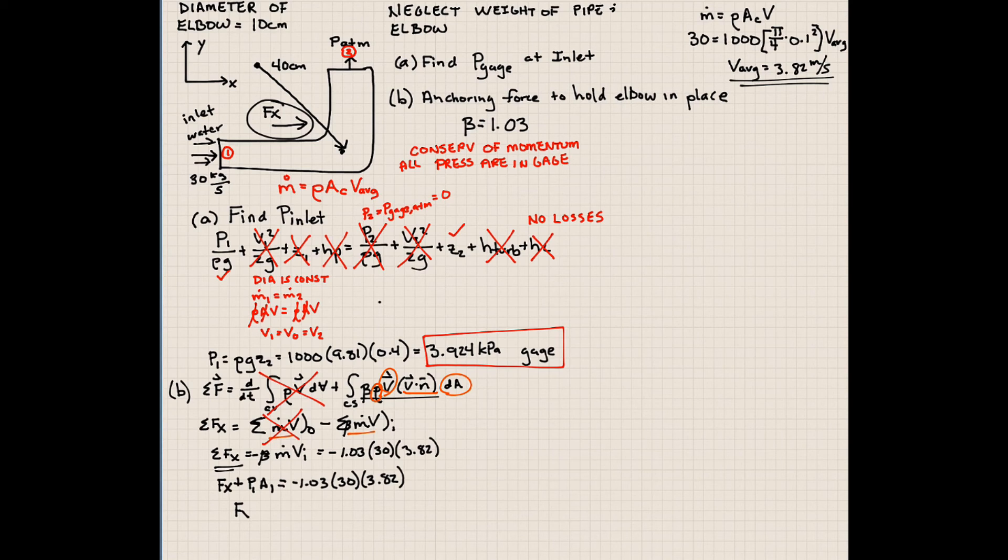So our F direction force is going to be minus 3.924 times our area, pi over 4 times 0.1 squared. So our total F direction force is going to be negative 148.8 newtons. This negative sign means we just guessed the direction wrong at the beginning, so it's actually going to be to the left. So this force actually will be acting to the left. So let me make that change up here too. So this will actually be acting to the left.